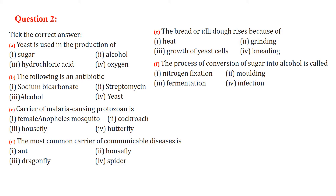Now tick the correct answer. Yeast is used in the production of alcohol. The following is an antibiotic: streptomycin.